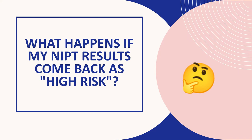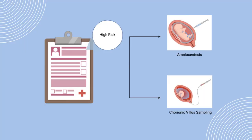So what happens if your NIPT results come back as high-risk? If NIPT results come back as high-risk for at least one of the chromosomal abnormalities tested, further testing is required to confirm a diagnosis. Your healthcare provider will then order a diagnostic test such as amniocentesis or chorionic villus sampling, both of which are invasive and pose a slight risk of miscarriage.